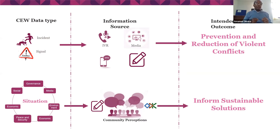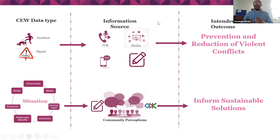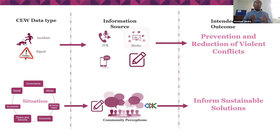In addition, we are also collecting situation information. The situation data is all about community perception on governance, on economy, on peace and security, on environment, and all sorts of things. This also helps to inform sustainable solutions. Policy makers, government executives, as well as informal structures — religious leaders, elders, Abagadas in Ethiopia, and the Ougazis — would be able to get the information and through the steering committee respond properly to the needs both in the long and short term.